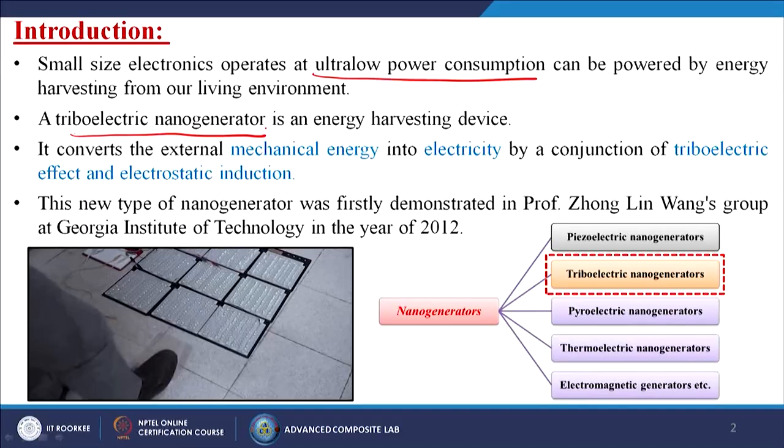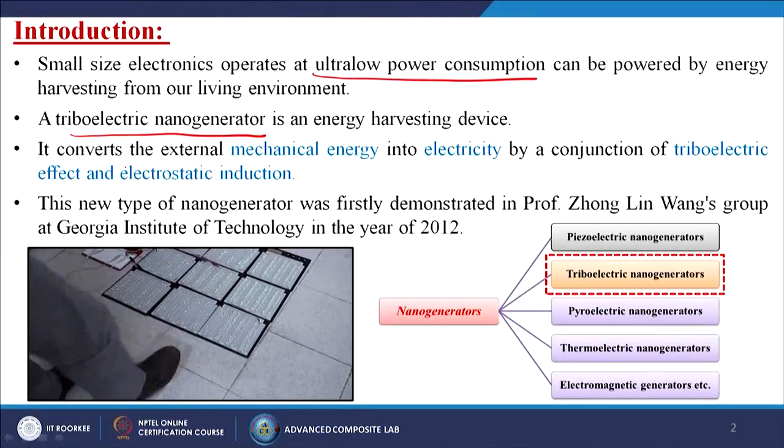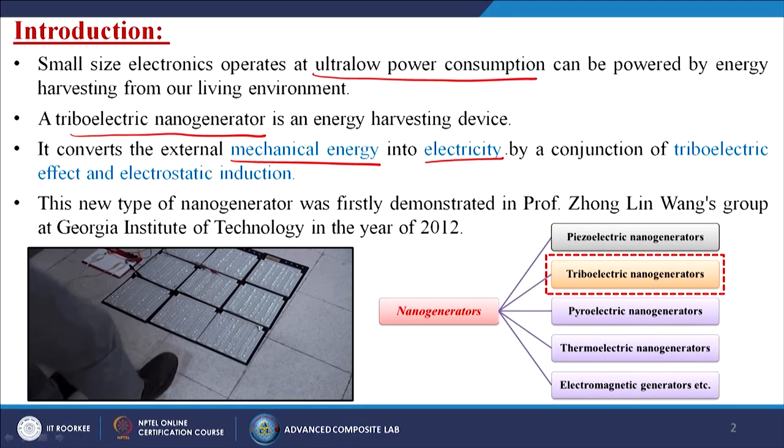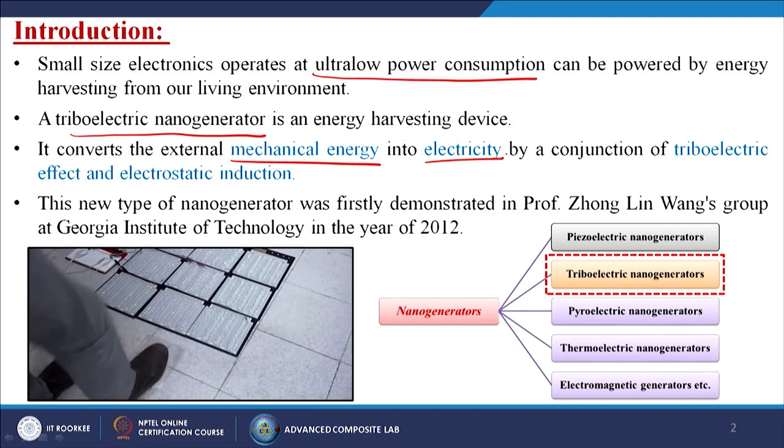Basically, a triboelectric nanogenerator is an energy harvesting device because we are generating electricity from that particular equipment or device. How is it working? Basically, it converts external mechanical energy into electricity by a conjunction of the triboelectric effect and electrostatic induction.